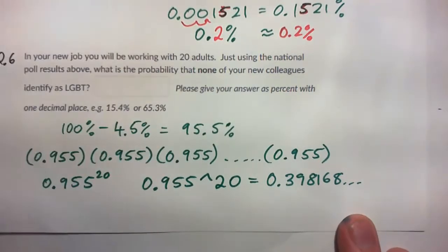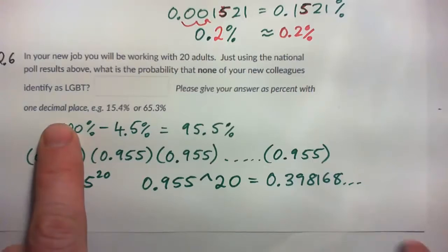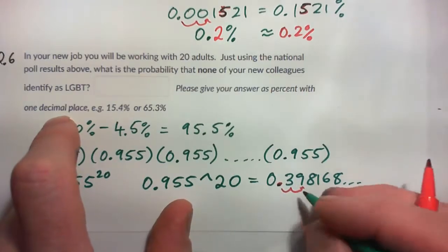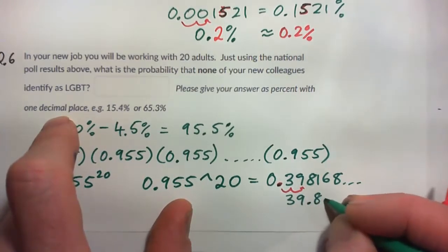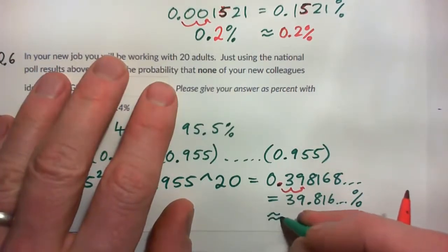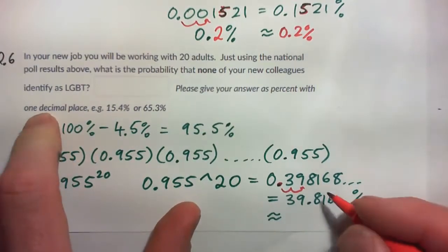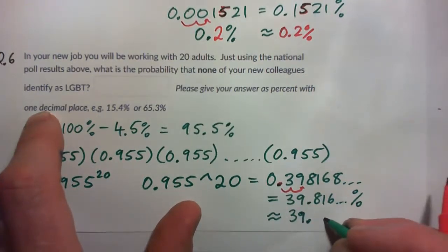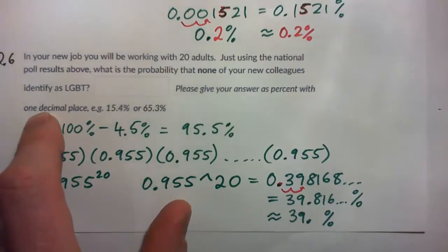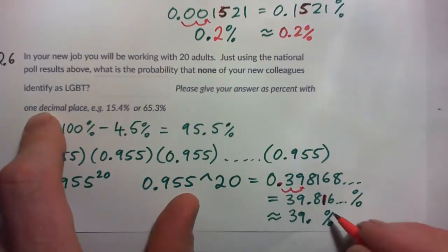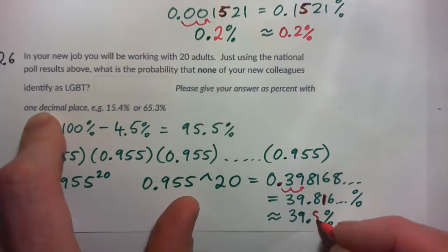Please give your answer as a percent to one decimal place. Moving the decimal point over two spots gives 39.816 percent. Rounding to one decimal place — there's a 1 coming after the 8, so we round down — and the answer is 39.8%.